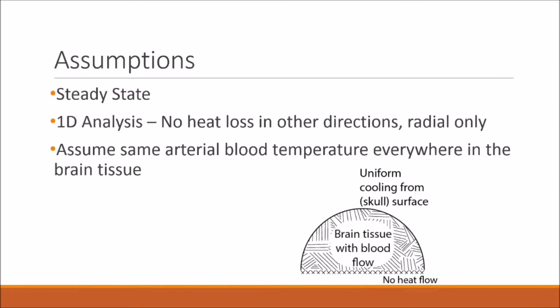We're also told to assume that heat is only lost in the radial direction. So because heat is only being lost in the radial direction, there's no possible way for heat to flow through the bottom of the brain, which is exactly why we have this no heat flow and these x's at the bottom of our schematic.